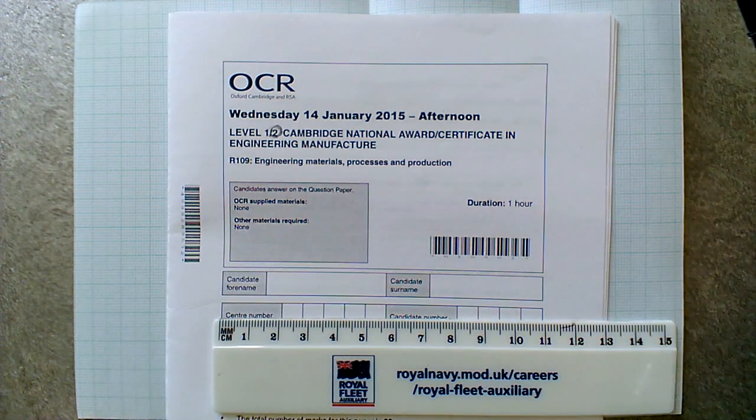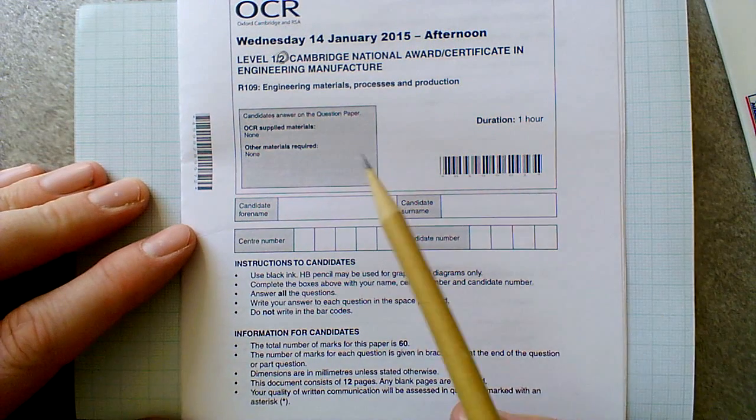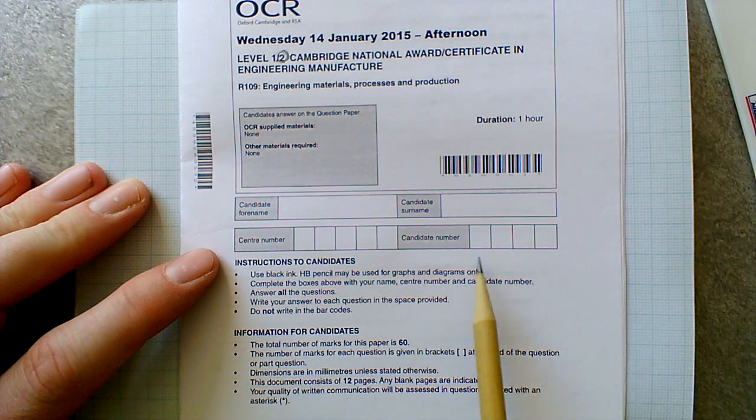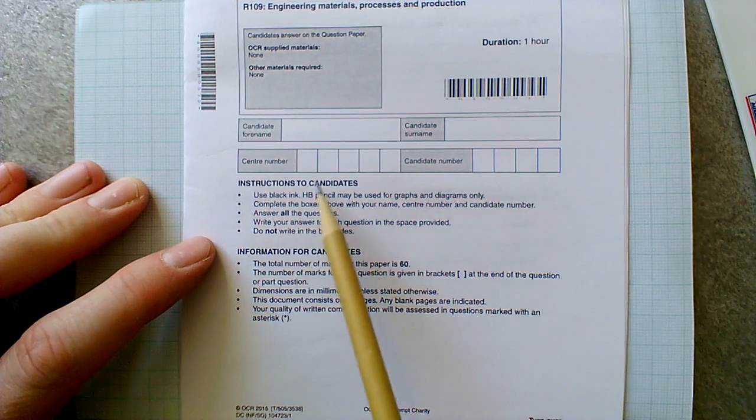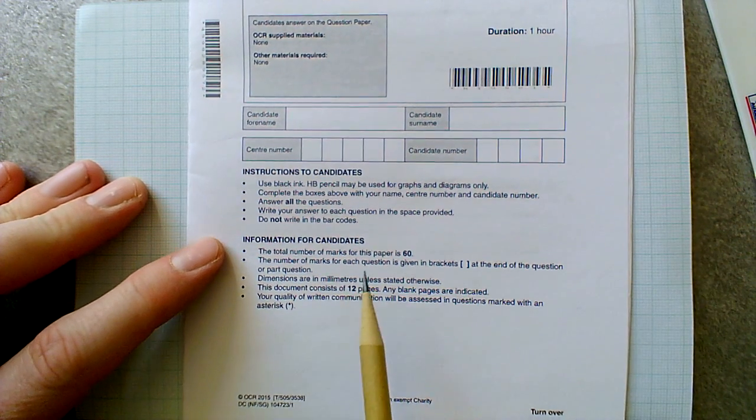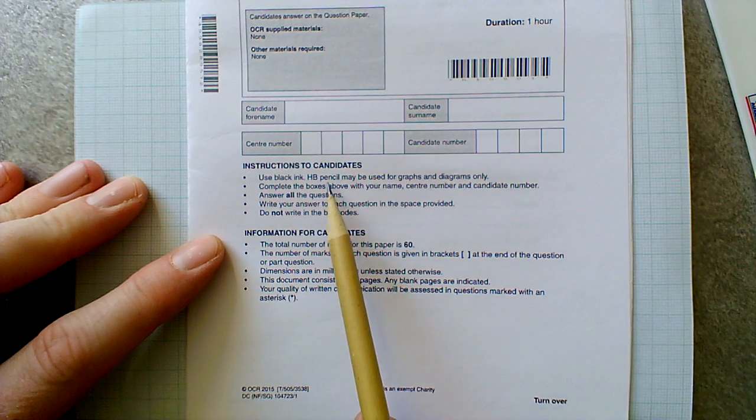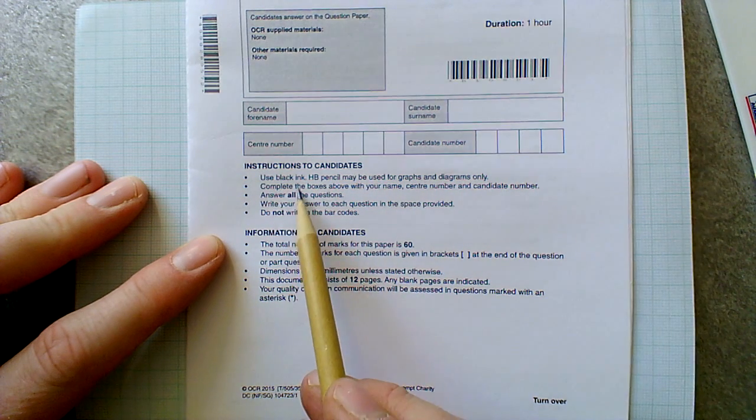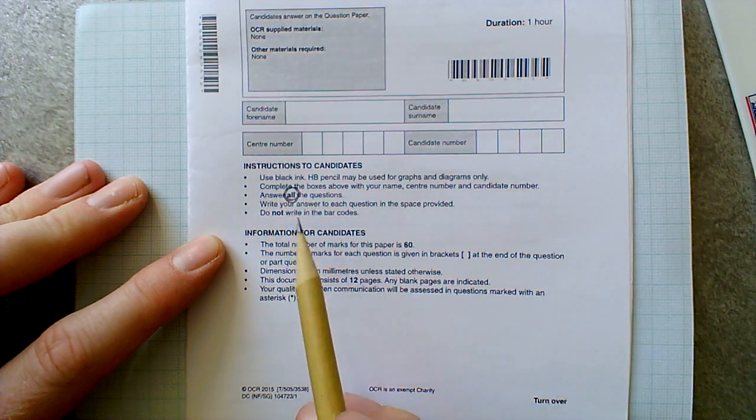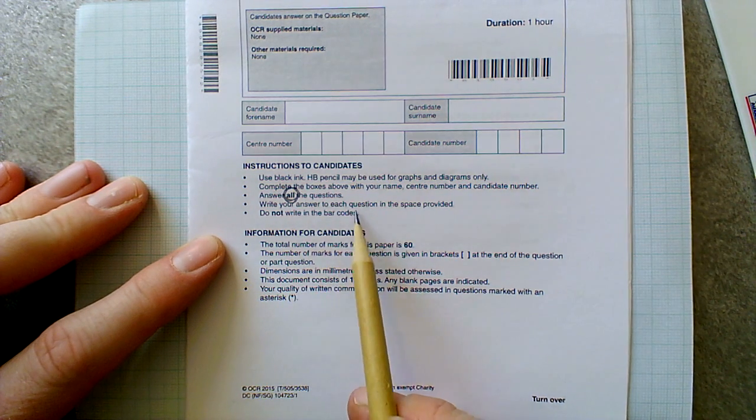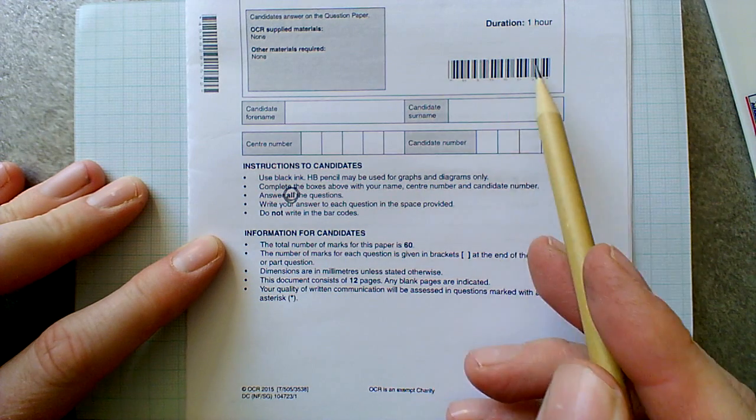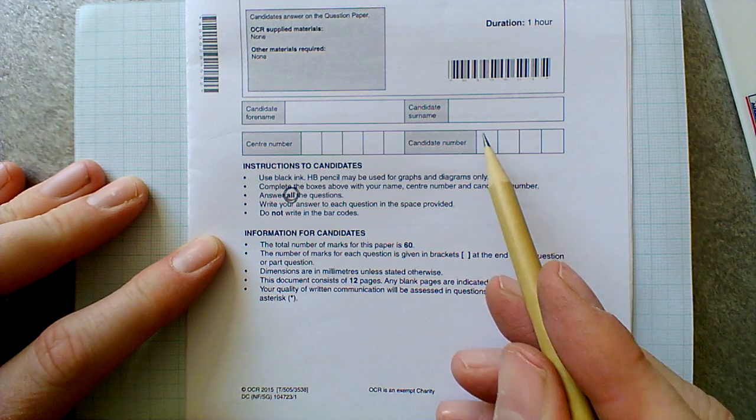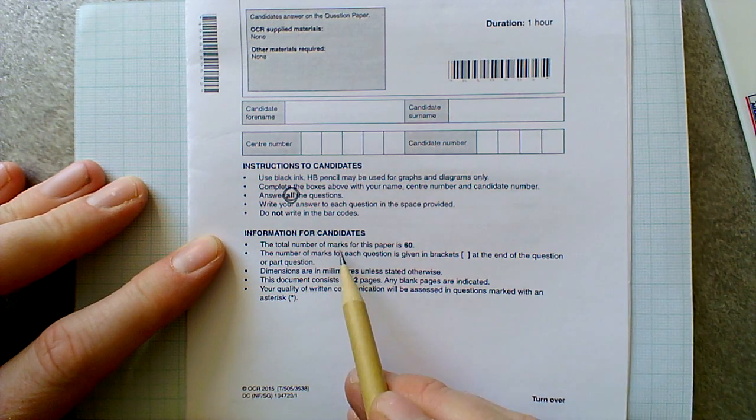This is an introduction, so we've just got a quick look at the paper. You've got the usual information with regards to your candidate forename, surname, centre number and your candidate number, which is a four digit number which you'll find on your desk. Read the instructions. Every single exam paper may have slightly different instructions. Black ink, HB pencil should be used for graphs and diagrams only. Complete the boxes above with your name and your centre number and your candidate number. Answer, this is really important, all of the questions. And if you're not sure, at least have a go. Write your answer to each question in the space provided. Do not write on the barcodes. That's these things here. They actually identify you to the examiners, so the paper gets split up and goes to different markers. So it's important that you don't damage that barcode. The total number of marks on the paper is 60.